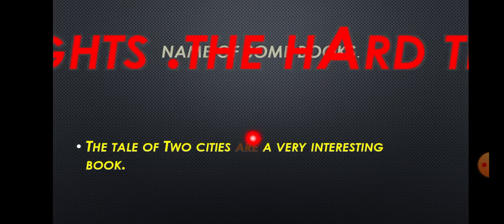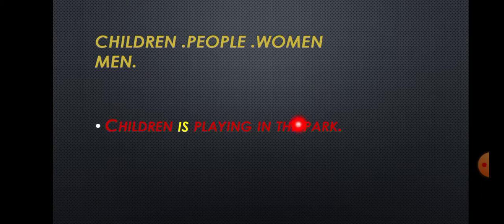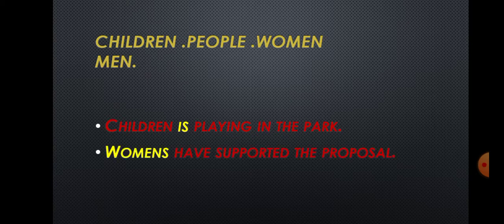Next, 'children' - many students will make the mistake of saying 'children's' - no, children is itself the plural form. Similarly people, women, men - these are already plural. Example: 'Children is playing in the park' - wrong, because children is plural. Correct: 'Children are playing in the park.' Next: 'Women's have supported the proposal' - wrong. 'Women' is already plural, so we don't add 's'. Correct: 'Women have supported the proposal.' 'Have' is plural, which is correct.